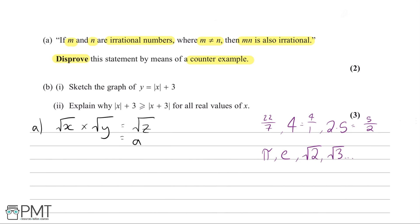Looking at the square numbers: we could use 1, but root 1 times root 1 won't work because m and n can't equal each other, and root 1 equals 1 which is rational. We could use 4, but that gives root 2 times root 2, meaning m and n are the same number. We could use 9, giving root 3 times root 3 — same number again — or root 9 times root 1, neither of which are irrational.